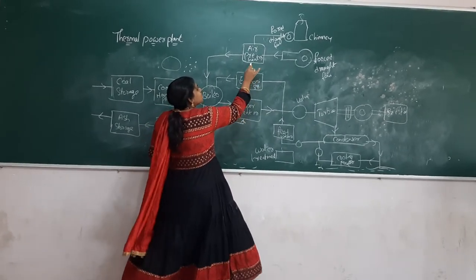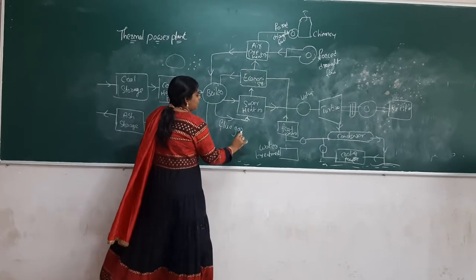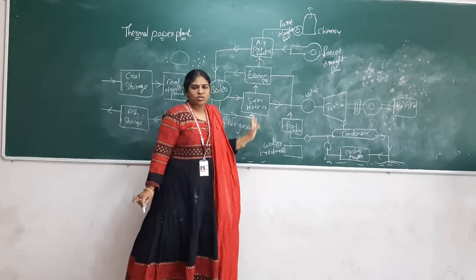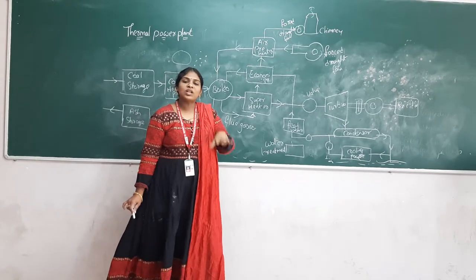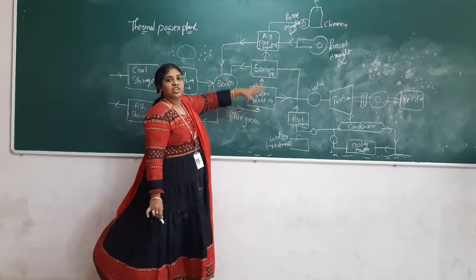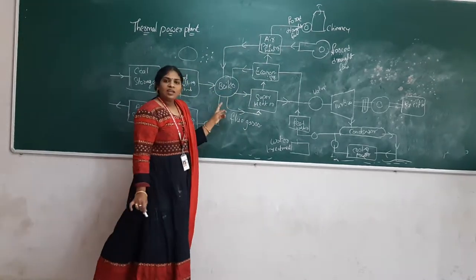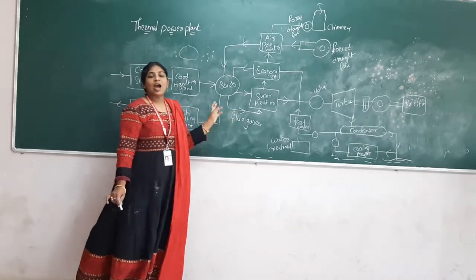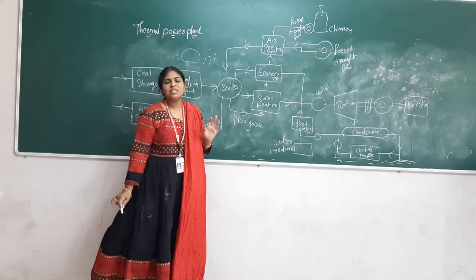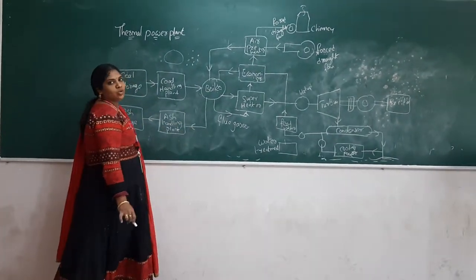There are three main blocks: superheater, economizer, and air preheater, and there is a common link between them — flue gases. After combustion of coal, you get different flue gases which need to be expelled into the atmosphere. But these flue gases consist of high temperature, so at every stage before the flue gases go to the atmosphere, we utilize their heat. Then we send them to the chimney. We also get ash after combustion, which has to be removed periodically — if not removed properly, it reduces boiler efficiency. The ash is removed and goes to ash storage.